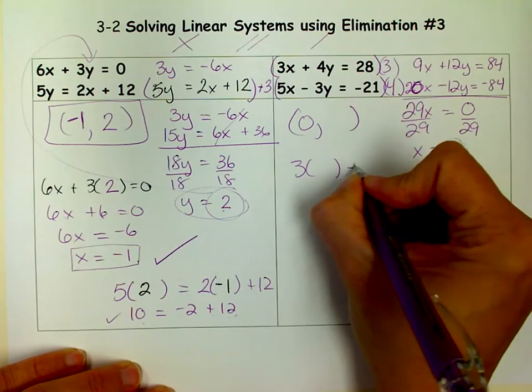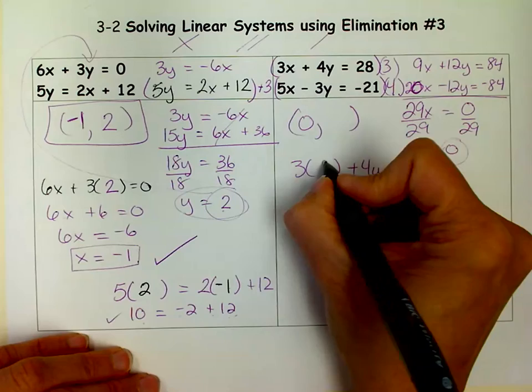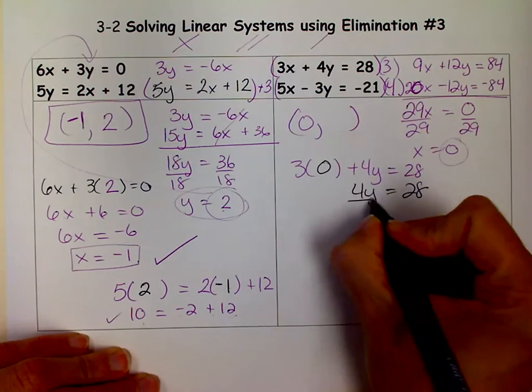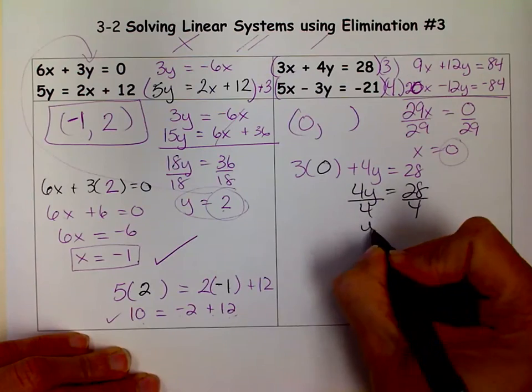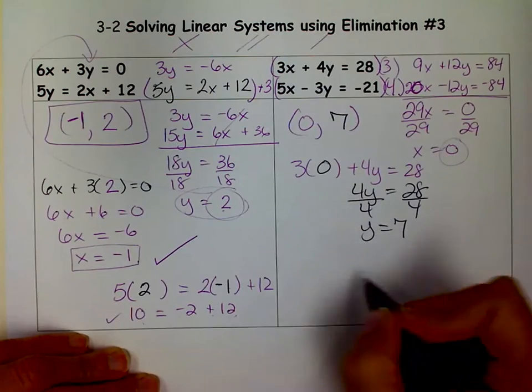And now I'm going to take that 0 and plug it in for my X. I'm going to say 3 times 0 plus 4Y equals 28. So I put my 0 in here. 3 times 0 is 0. 0 plus 4Y is 4Y. So I get 4Y equals 28. When I divide both sides by 4 I get Y equals 7. Put my 7 there and then I'm going to check.